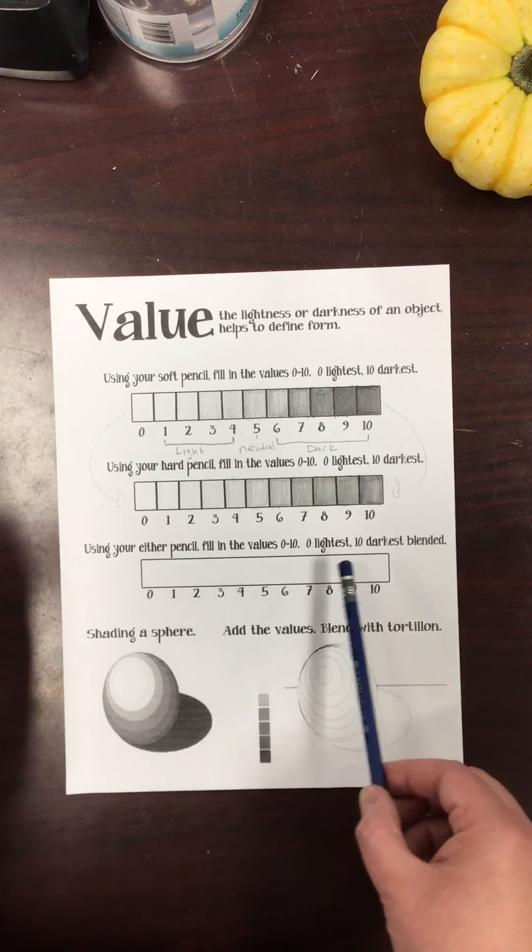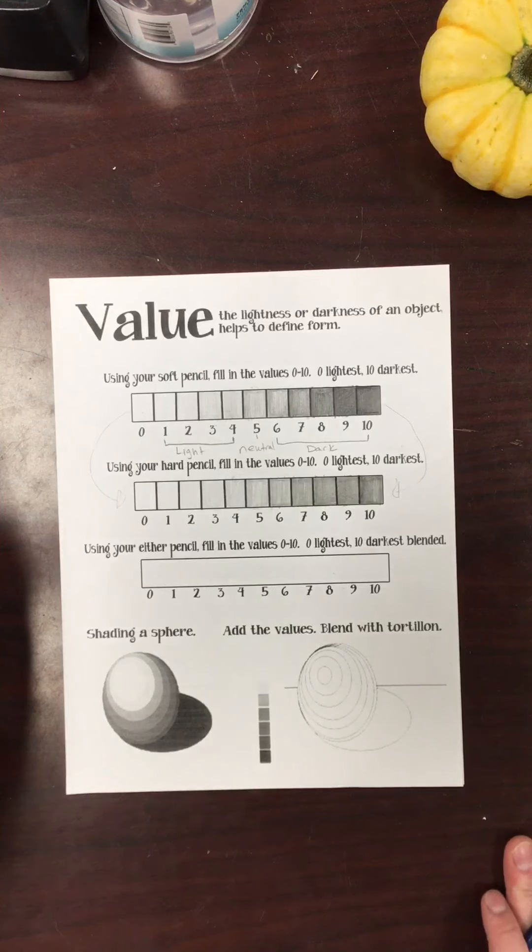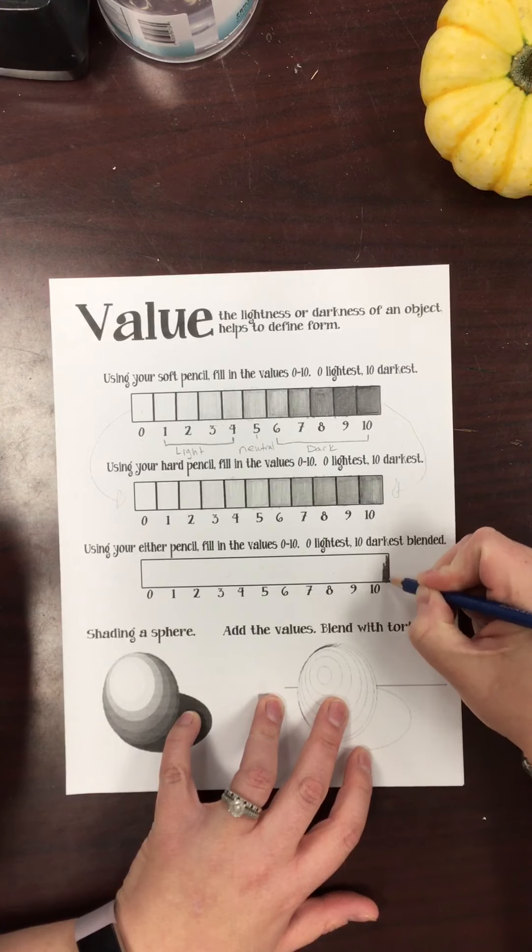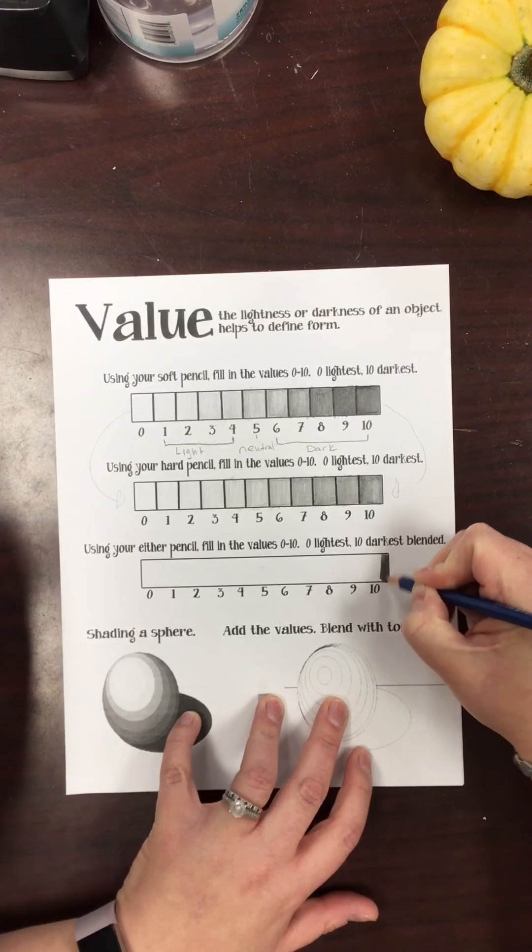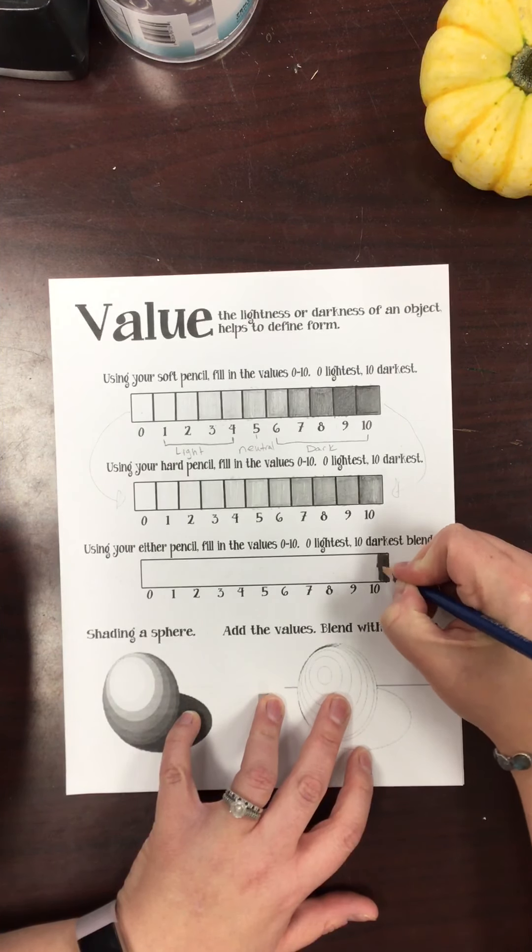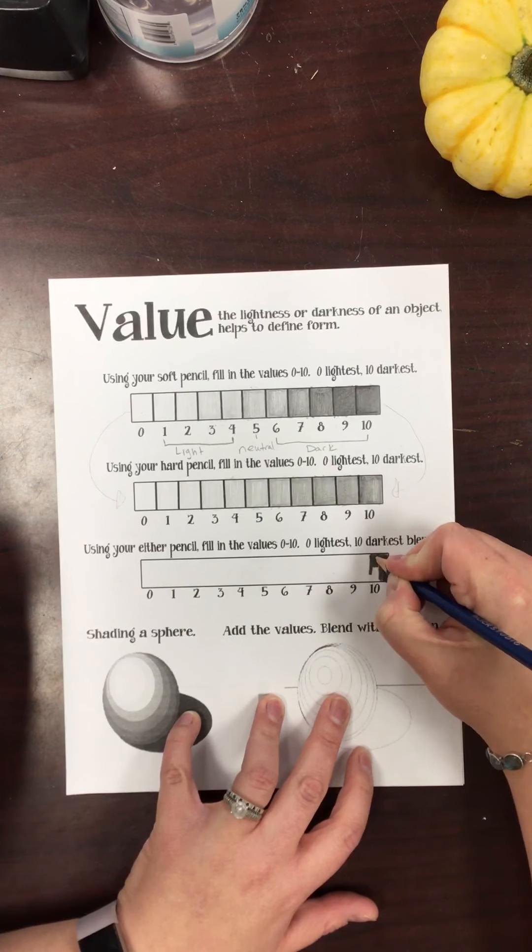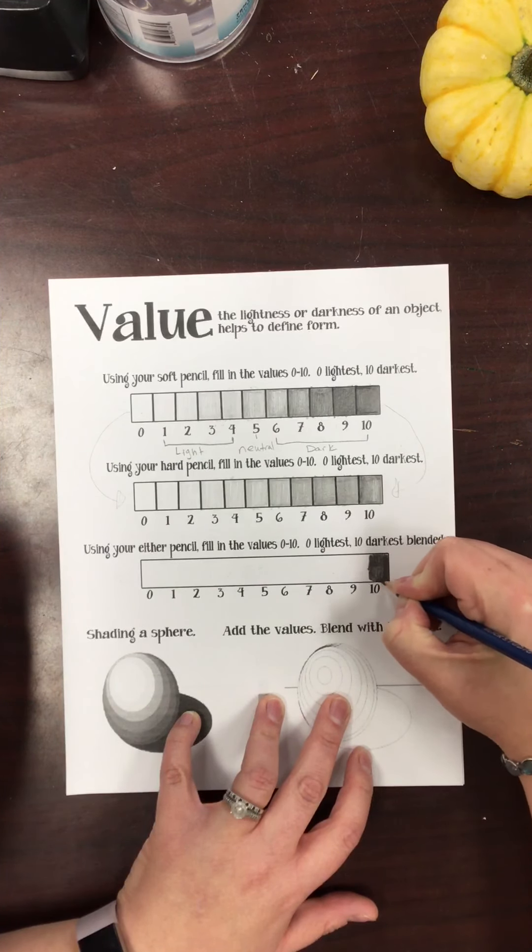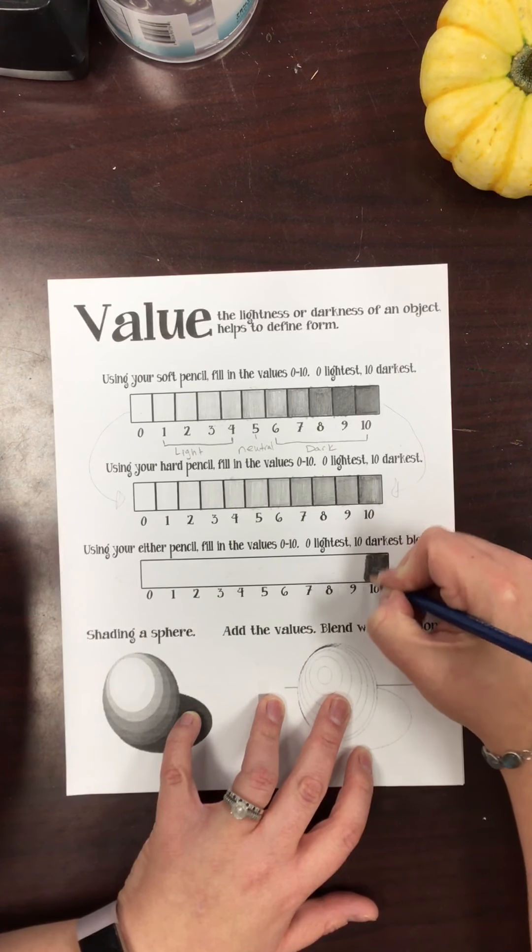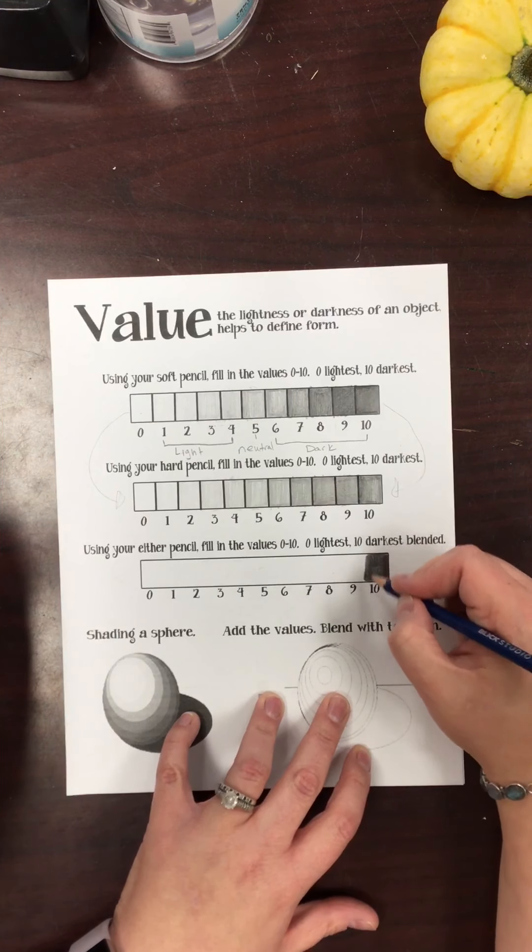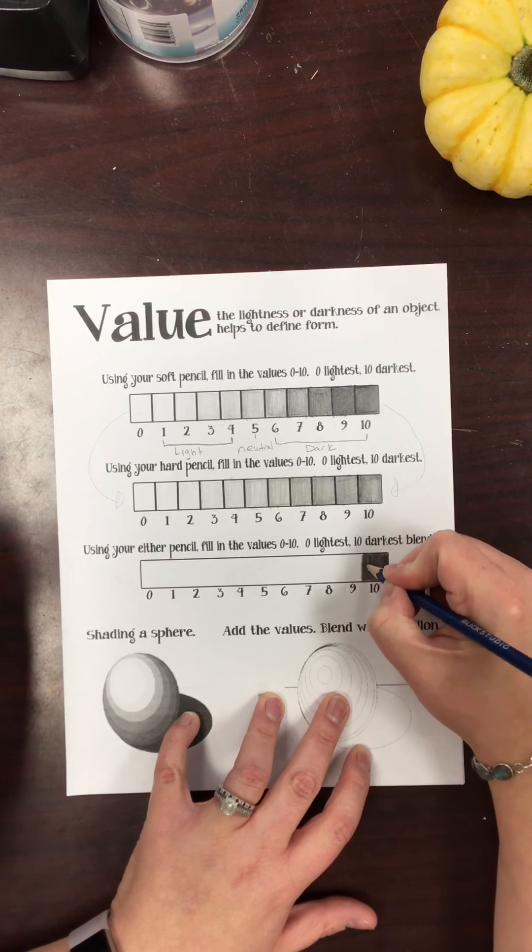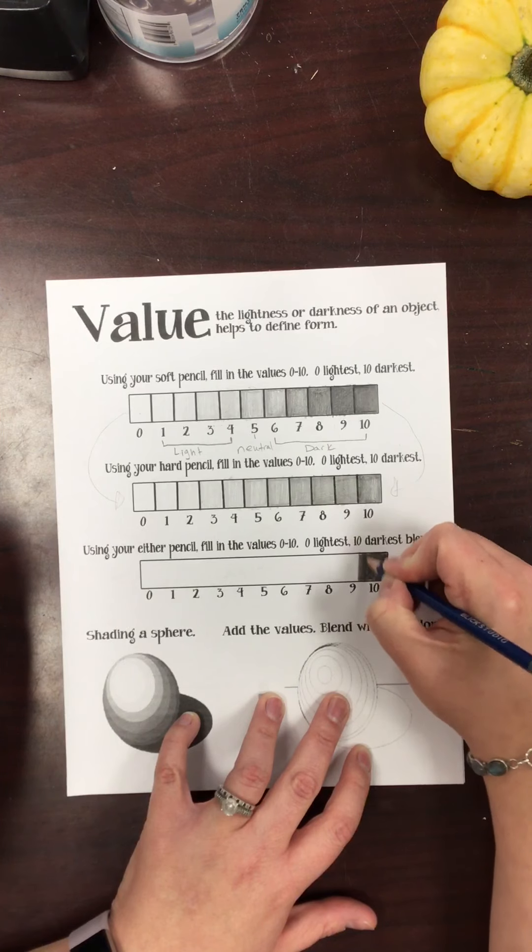So I might start at the 10 and kind of end somewhere around the 6, and then pick up at one and then color over that way, just kind of whatever is easier for you. Okay, so at the 10 you want that to be as dark as you can possibly get it, so really using a lot of pressure. And it might take a few times of like going kind of back and forth and layering on top of itself. I might color outside the lines a little bit and then I'll show you how you clean it up.